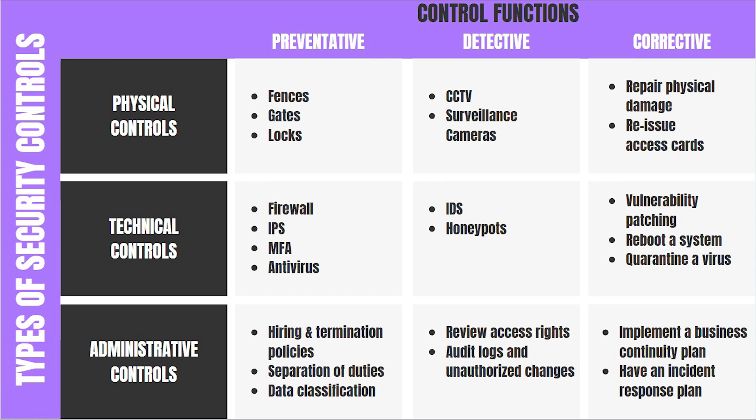Responsive and corrective controls are implemented to provide automated responses to known issues and are orchestrated to work with preventative and detective controls. The difference between the two is that responsive controls are designed to fix what deviates from the security baseline, while corrective controls simply correct the identified issues.